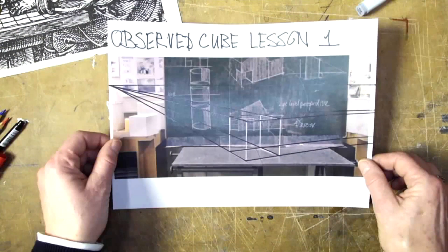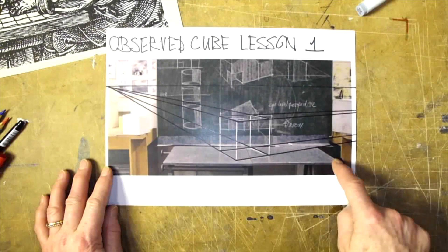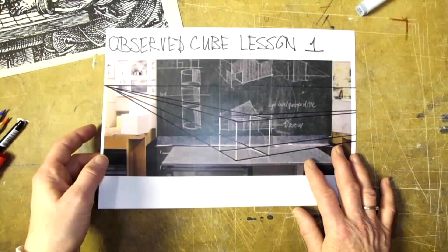In the first lecture we started drawing a cube by observation. This gave information about what happens with the angles and dimensions of a cube in perspective. As observation was the starting point of perspective, we should go back to that idea.